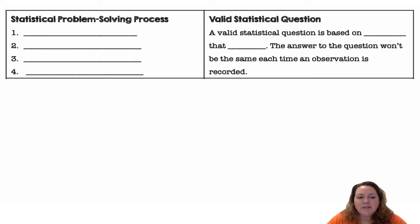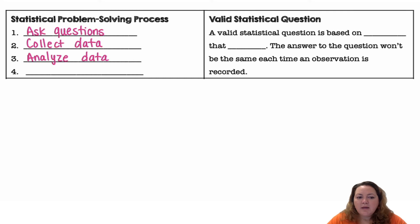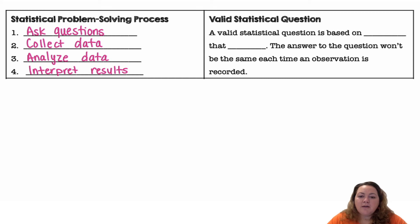A statistical problem-solving process includes asking questions, collecting data, analyzing the data, and then interpreting the results. A valid statistical question is based on data that vary, so the answers to the questions won't be the same each time an observation is recorded.